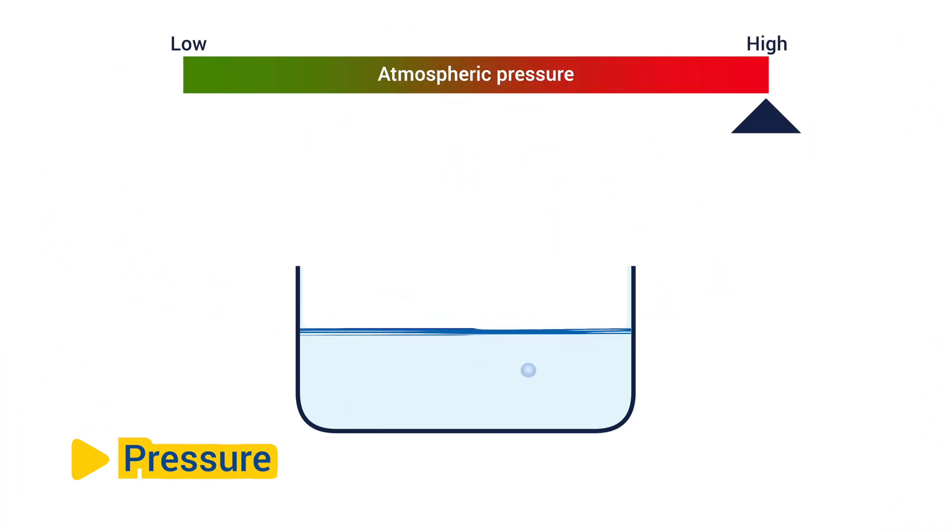Pressure. Changes in atmospheric pressure can affect the rate of evaporation, although this influence is typically less significant compared to temperature and humidity. Lower atmospheric pressure, as found at higher altitudes, can enhance evaporation, because the reduced pressure allows water molecules to escape more easily into the air.